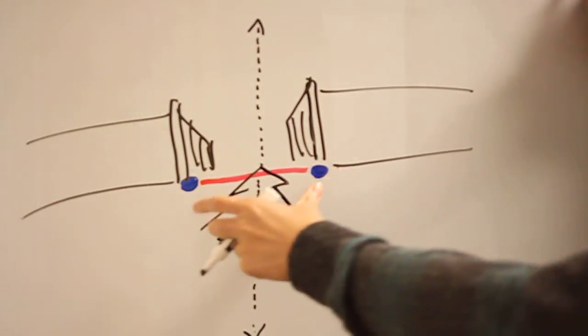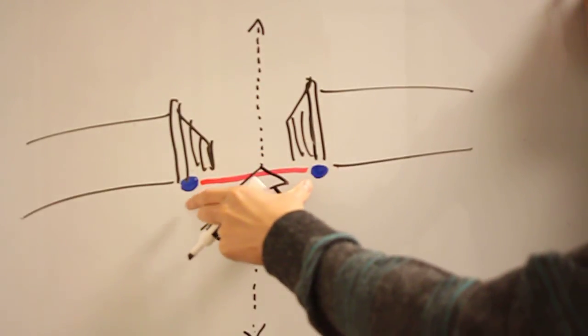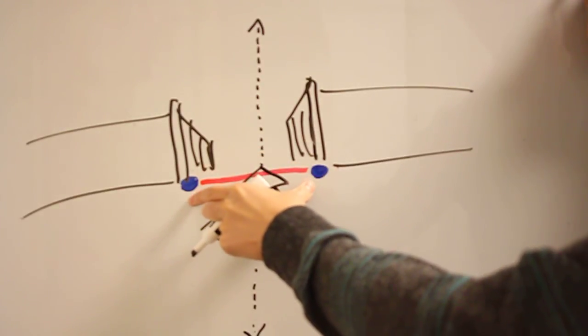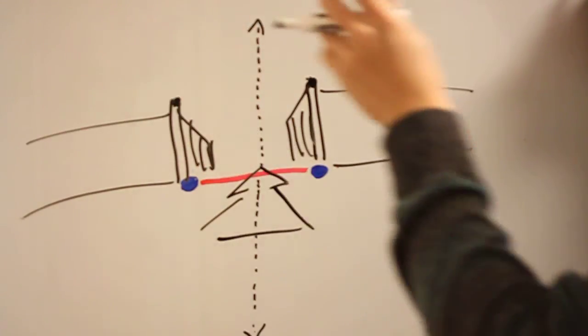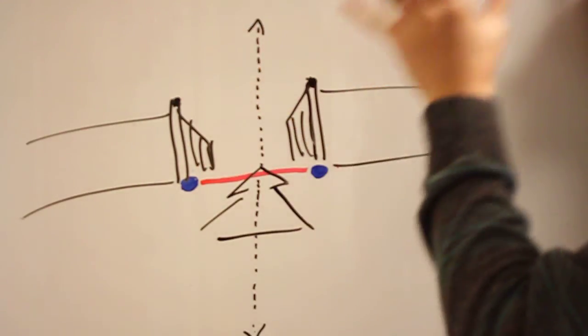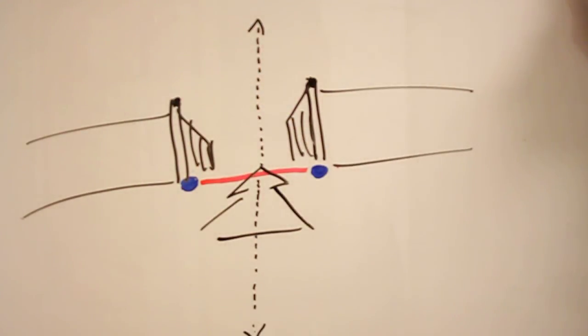And how those two points, when you later extrude them into lines, set a very obvious architectural threshold.